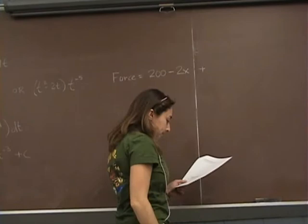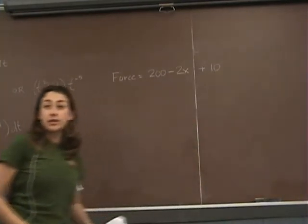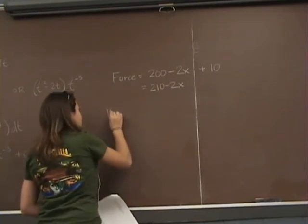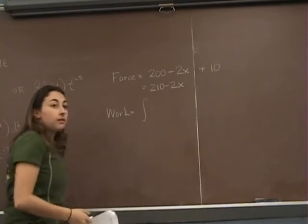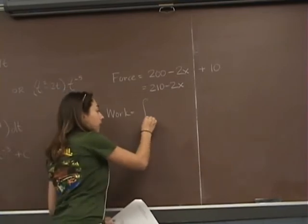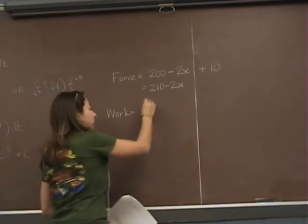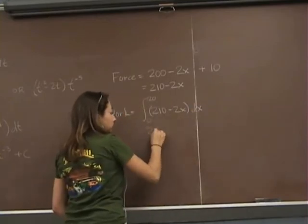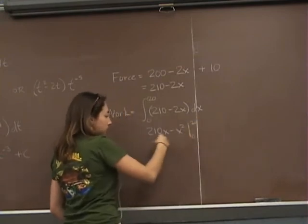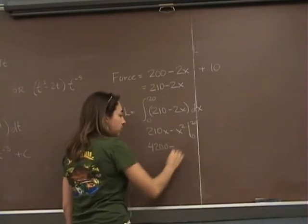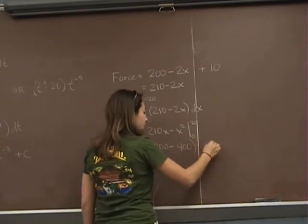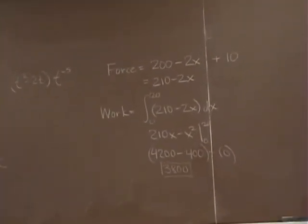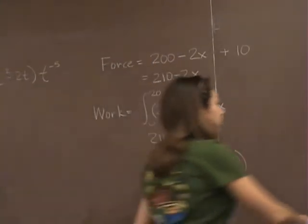So that's the force of the rope. Now what about the bucket? The bucket is 10 pounds, it's not ever changing. So the total force I have is 210 minus 2x. So the work is going to be the integral from 0 to 20 of (210 minus 2x) dx. So I get 210x minus x squared from 0 to 20. So 20 times 210 is 4200, 20 squared is 400, so I'm going to get 3800 foot pounds.